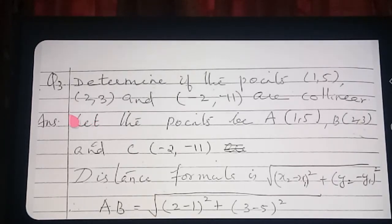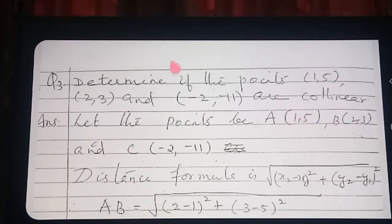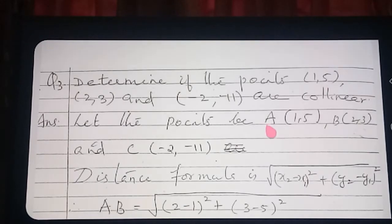Hello, good morning students. Today we will start with question number 3 of exercise 7.1. Read the question: Determine if the points (1,5), (2,3), (-2,-11) are collinear. When you get this type of question, you should name the points. I have given the names as A(1,5), B(2,3) and C(-2,-11).